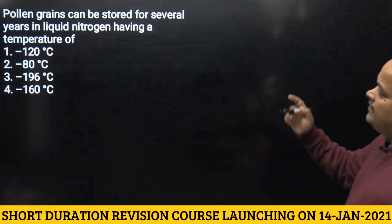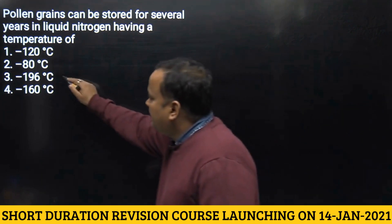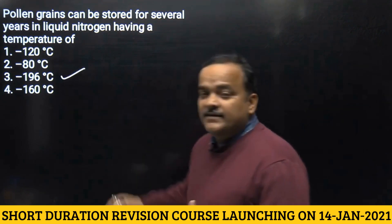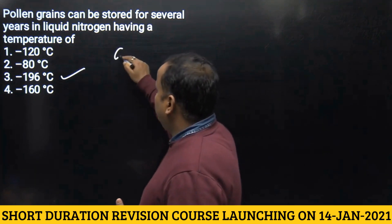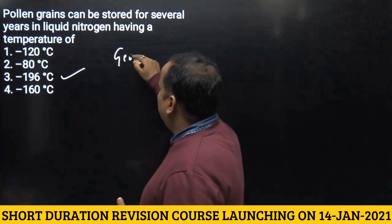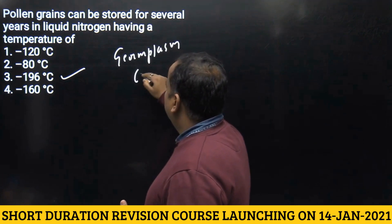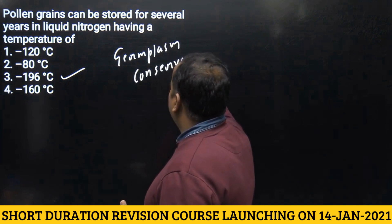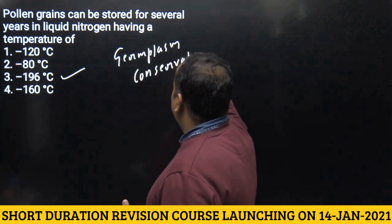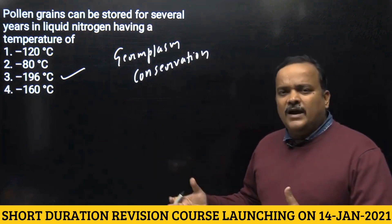The next question repeats an earlier topic: pollen grains can be stored for several years in liquid nitrogen at a temperature of minus 196 degrees centigrade. This is called cryopreservation and is an important component of germplasm conservation, which will also be studied in plant breeding and biodiversity.